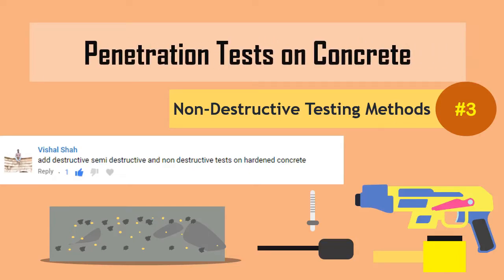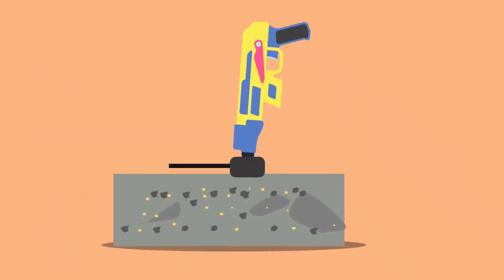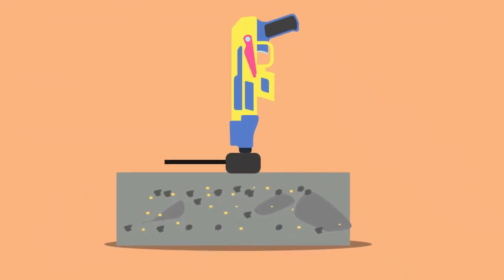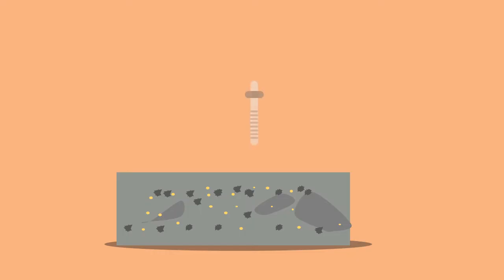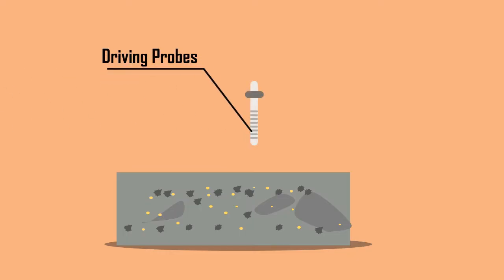Penetration tests on concrete. Penetration resistance methods are aggressive NDT procedures that are used to determine the strength properties of concrete. This method is done by driving probes into concrete samples using a uniform force.